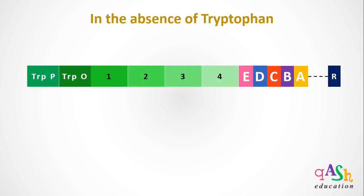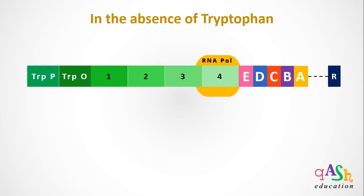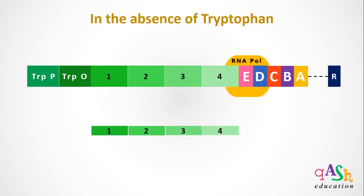Let's look at the first case: in the absence of tryptophan, meaning there is no tryptophan present in the growth media. Because there is no tryptophan present, the trp operator site is free for the binding of RNA polymerase. RNA polymerase catalyzes the transcription of the TrpL gene and halts at the attenuation site present in the fourth segment.